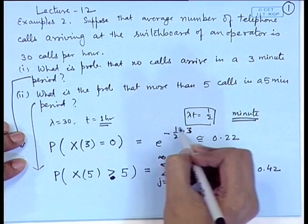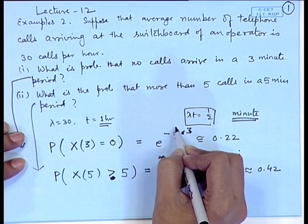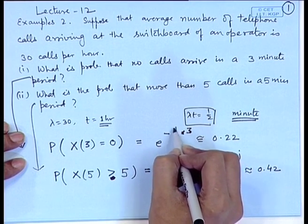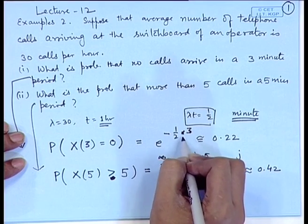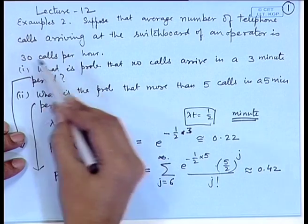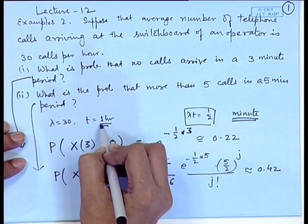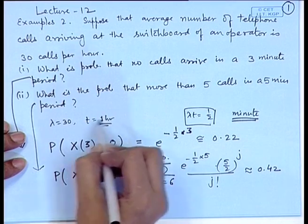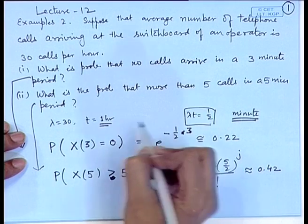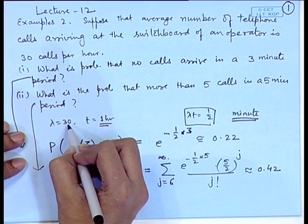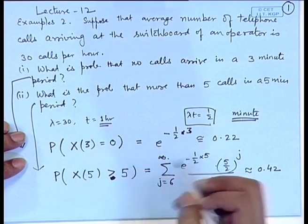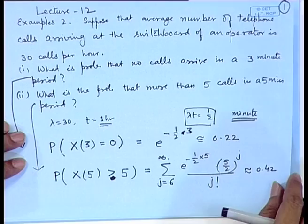When applying the Poisson process, the parameter λ depends on the unit of time being considered. Initially it is given as 30 calls per hour, so if we consider the unit as hour, λ=30. But if we consider the unit as minute, then λ becomes 1/2 because 30/60 = 1/2. This is the way of evaluation in a Poisson process.